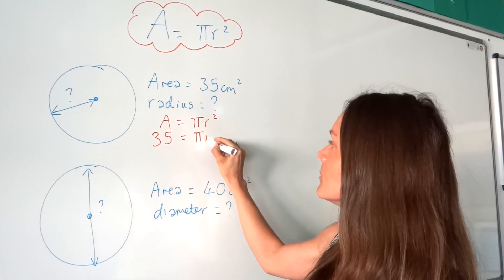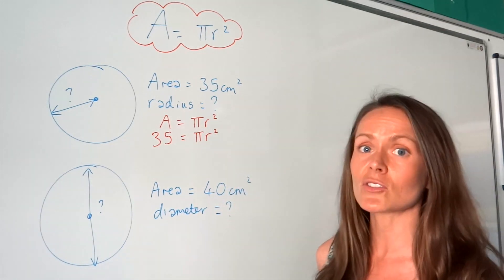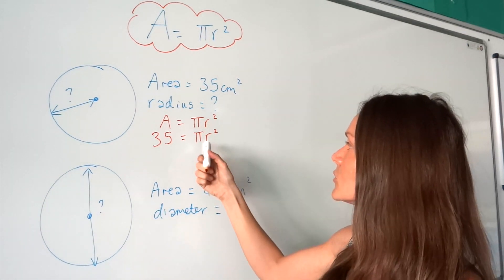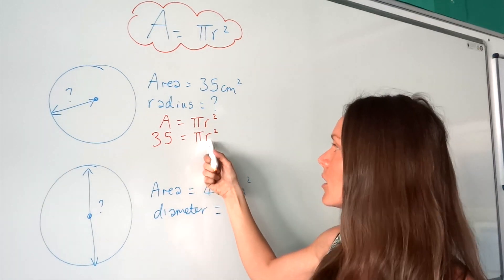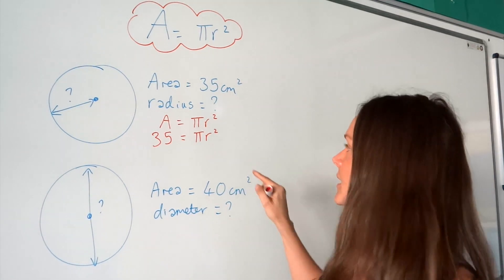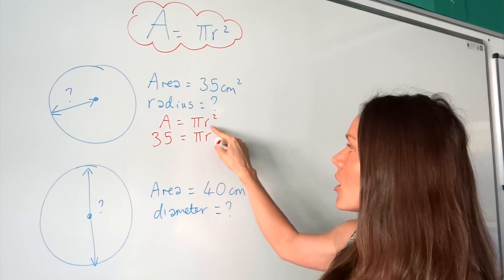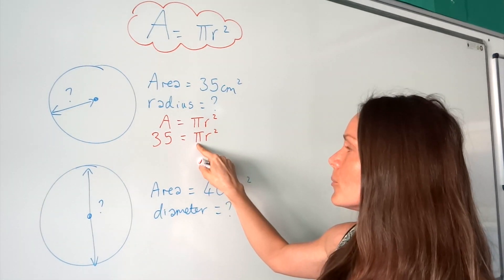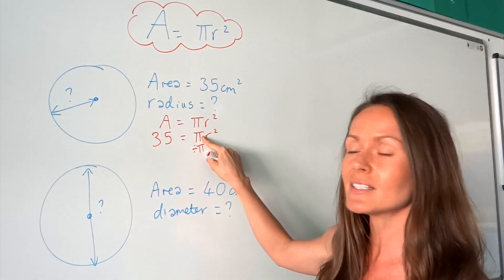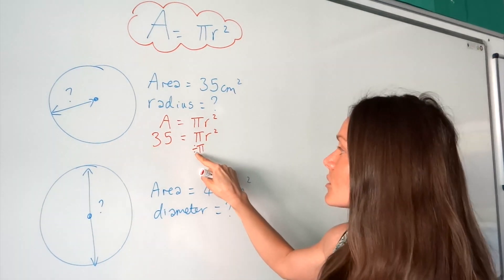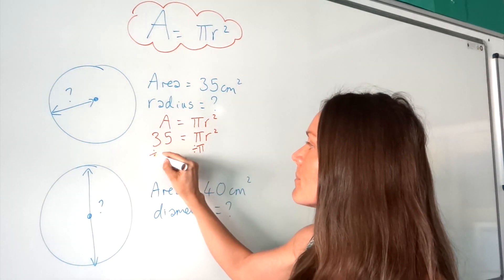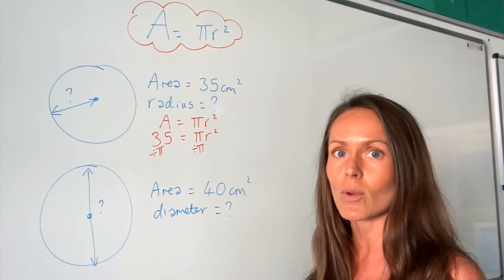So everything else stays the same, and now we have to try and work out the radius. We're just solving this equation to try and find r. We have to reverse all the operations around r, the radius, until r is by itself. We always work from the outside in, leaving whatever's closest to r until the end. So I'm going to get rid of pi to begin with — I'm going to divide by pi, because at the moment it's being multiplied, and I have to do the opposite of multiply, which is divide. Remember, when you do something to one side of the equation, you have to do the same thing to the other side to keep the equation balanced.